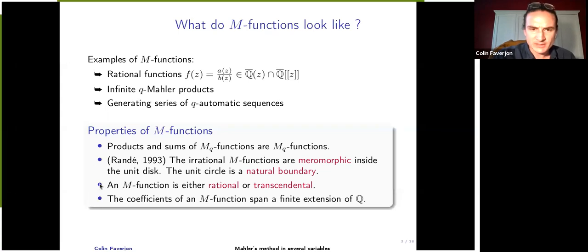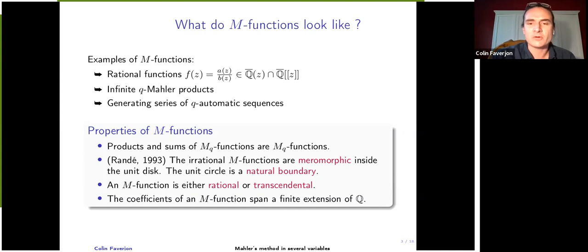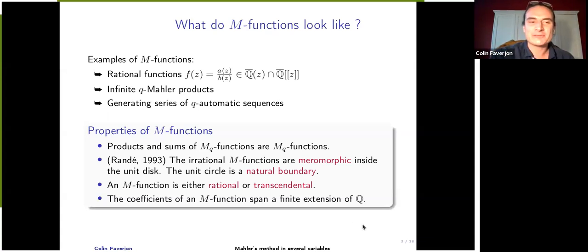An M function is either a rational function or a transcendental function. Moreover, a more recent theorem states that M functions are hypertranscendental — they are not solutions of algebraic differential equations. This excludes a large number of functions from being M functions. Also important for arithmetic: the coefficients of an M function, though supposed algebraic, span a finite extension of Q, so they all lie in a fixed number field.